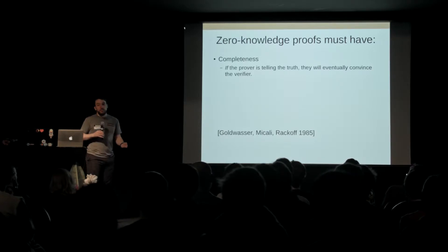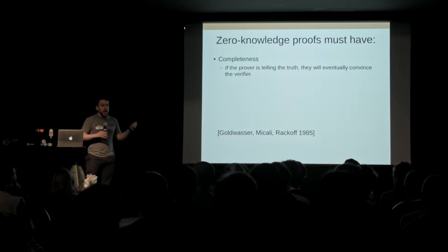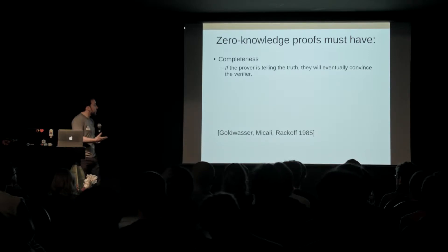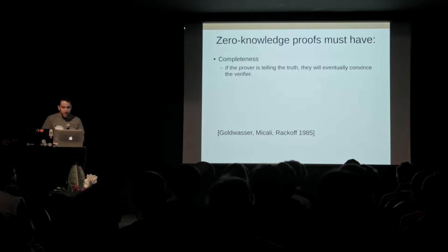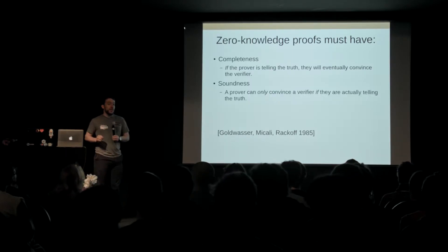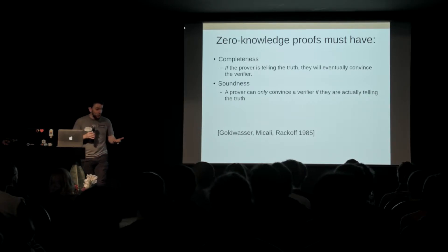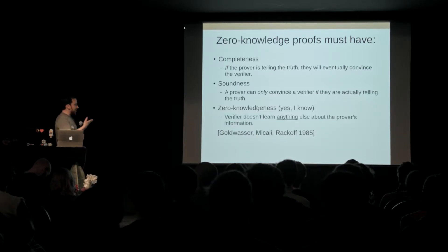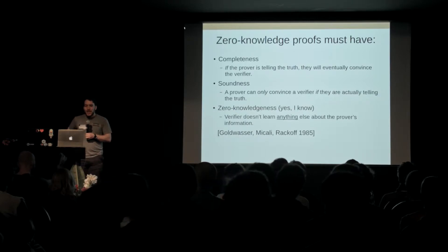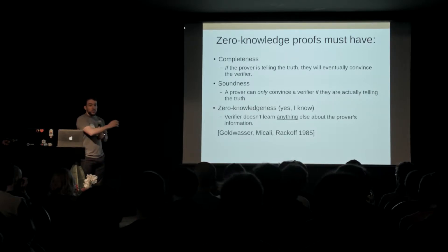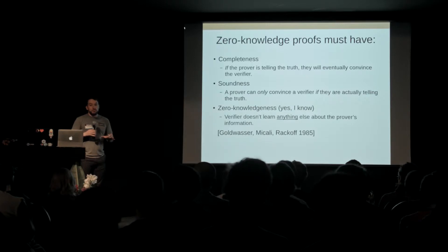Completeness means that if the prover — in this case my friend Alice — is telling the truth, she can eventually convince me. It might take some time and bandwidth, but eventually she can convince me she knows the secret information. It must have soundness, meaning she can only convince me if she knows the valid solution — if she doesn't know the solution or knows an invalid one, I can easily detect that. And finally, it needs zero-knowledgedness — yes, that's what the papers call it — which means I must learn absolutely nothing else other than that she knows the solution, or more generally, that whatever statement she is proving is true.